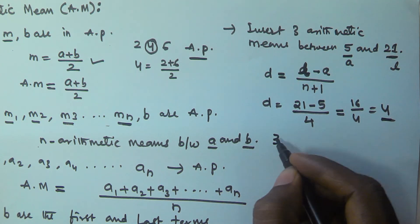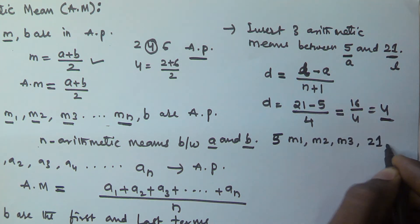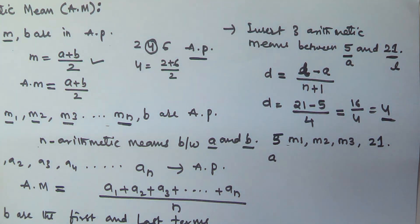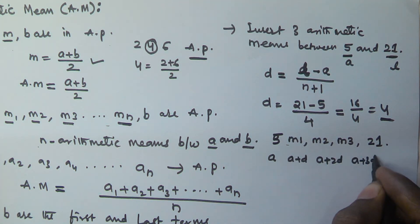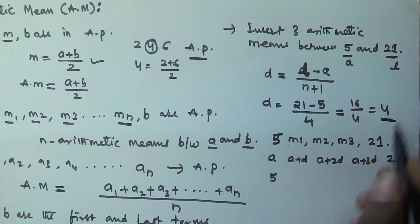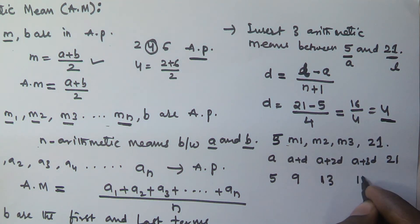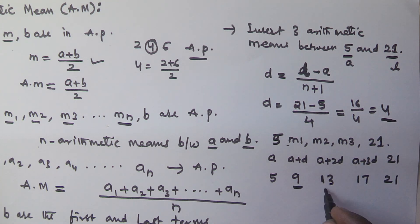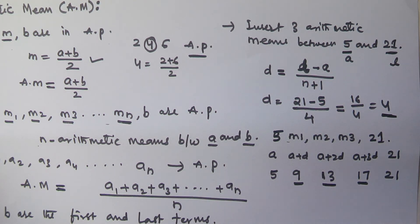Now we insert three means between 5 and 21: m1 = a + d = 5 + 4 = 9, m2 = a + 2d = 5 + 8 = 13, m3 = a + 3d = 5 + 12 = 17, and the last number is 21. So the three arithmetic means inserted between 5 and 21 are 9, 13, and 17. I hope you got this. Thank you very much for watching this video.